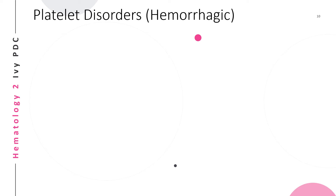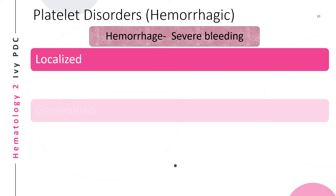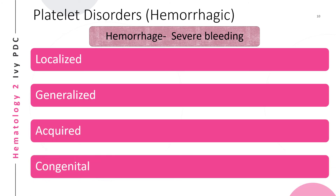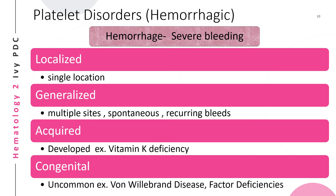Hemorrhage is defined as severe bleeding that requires physical intervention. It may be localized, generalized, acquired, or congenital. Acquired hemorrhage is secondary to conditions like vitamin K deficiency, liver disease, or kidney failure. Congenital disorders are uncommon and lead to repeated hemorrhages following minor injury. Examples include von Willebrand's disease and the different factor deficiencies.